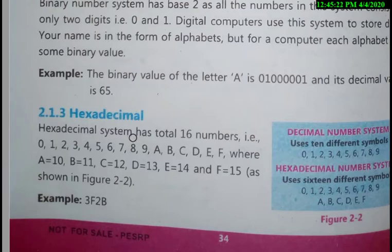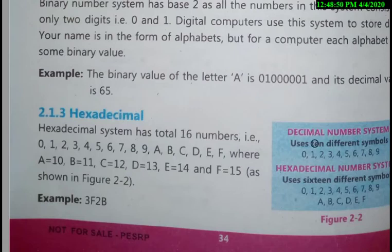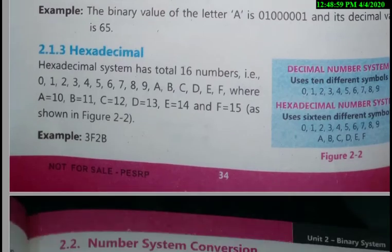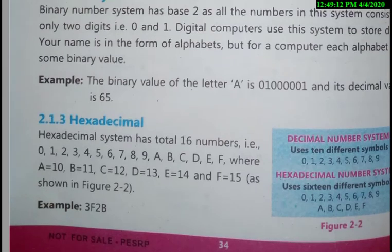The hexadecimal number system uses 16 different digits to represent data. The numbers from 0 to 9 are the actual decimal numbers, and after that the letters A, B, C, D, E, and F are used, where A equals 10, B equals 11, C equals 12, D equals 13, E equals 14, and F equals 15. So hexadecimal has a total of 16 digits: 0 to 9 and A to F. We will discuss the conversion between hexadecimal, binary, and decimal number systems.